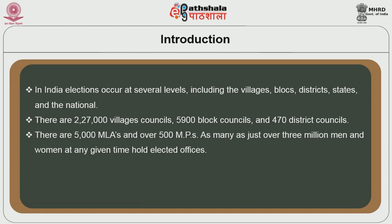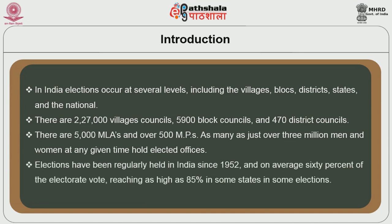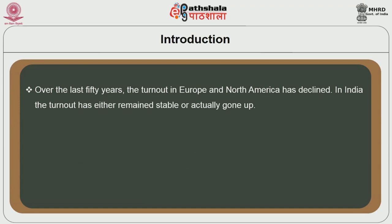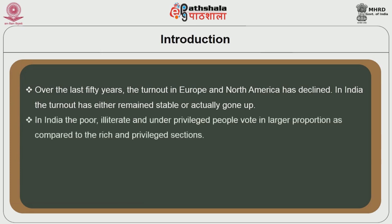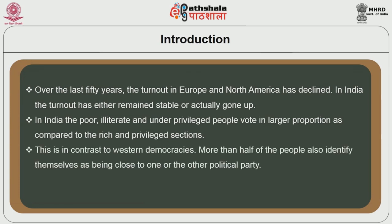As many as just over 3 million men and women at any given time hold elected offices. In India, elections have been regularly held since 1952 and on average 60% of the electorate votes, reaching as high as 85% in some states in some elections. Over the last 50 years, the turnout in Europe and North America has declined. In India, the turnout has either remained stable or actually gone up. The poor, illiterate and underprivileged people vote in larger proportion as compared to the rich and privileged sections. This is in contrast to Western democracies.